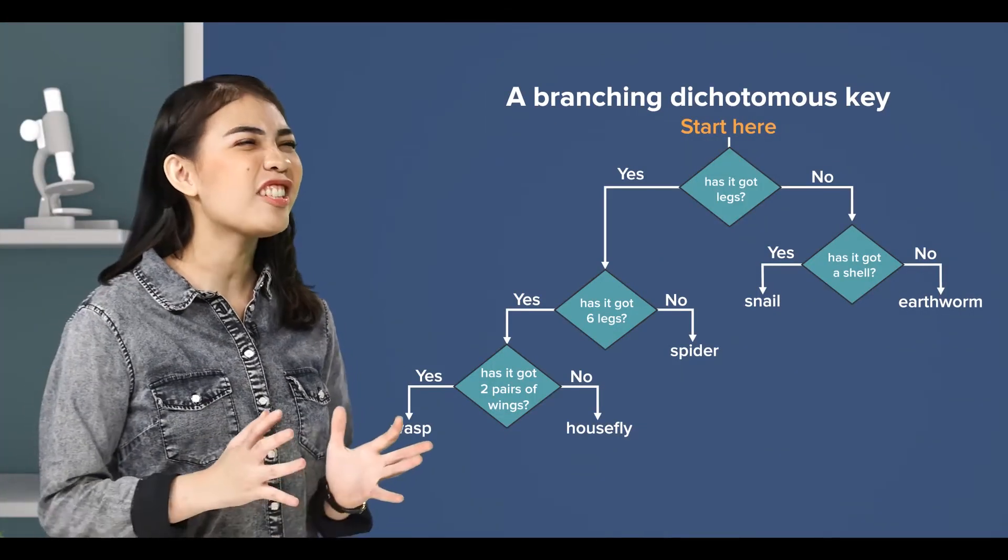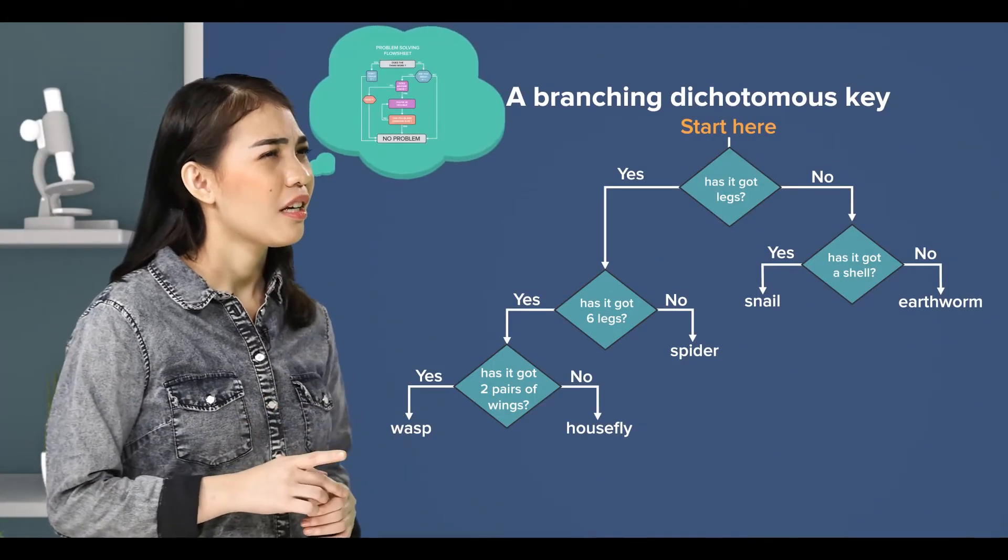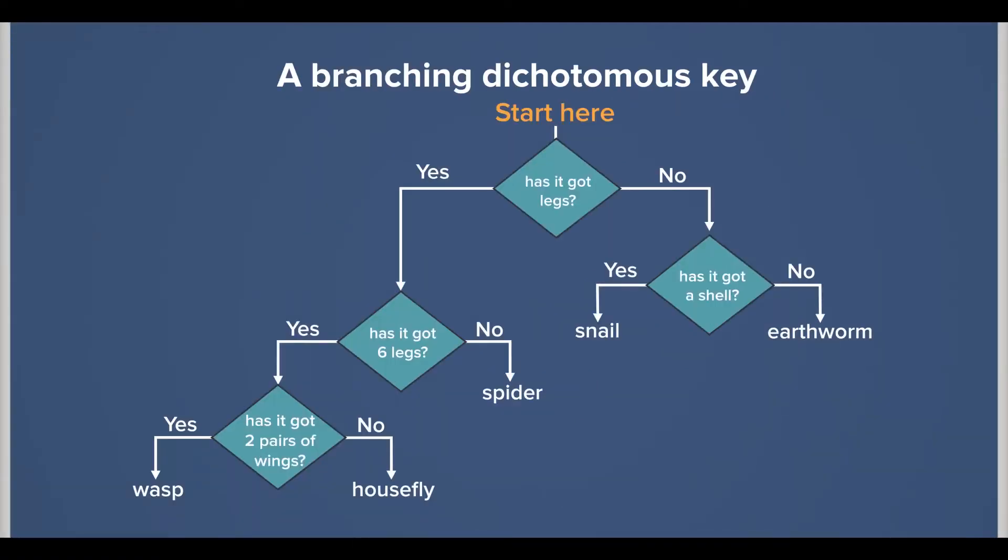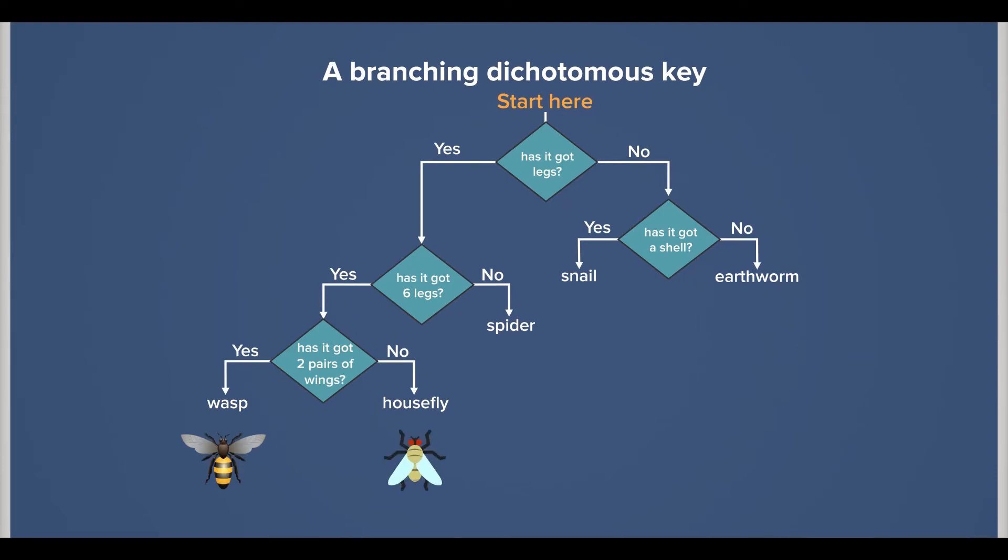Oh my, it looks just like my flowchart. So, by asking a series of questions, we can identify if the organism is a wasp, housefly, spider, snail, or earthworm.